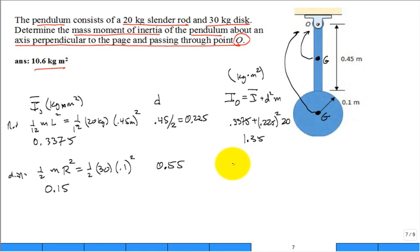And then we use the parallel axis theorem here. It's 0.15 plus the distance, 0.55 squared, times the mass of 30 kilogram. And that comes in at a whopping 9.225.